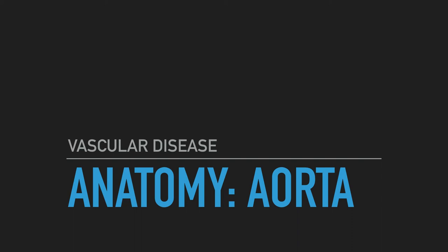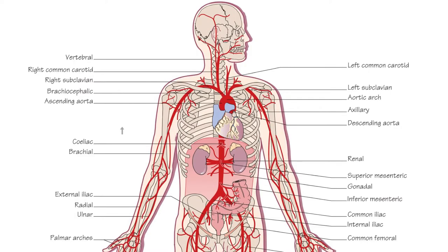The anatomy of the aorta. The aorta emerges from the left ventricle at the lower border of the third costal cartilage, behind the sternum, slightly to the left. In the superior mediastinum it curves upwards, forming the ascending thoracic aorta.